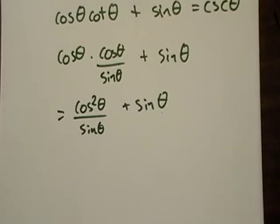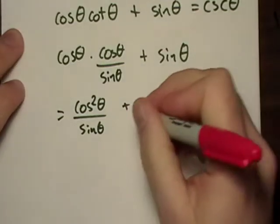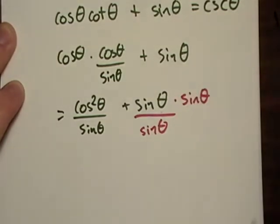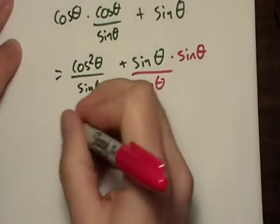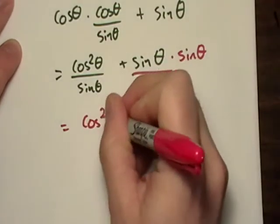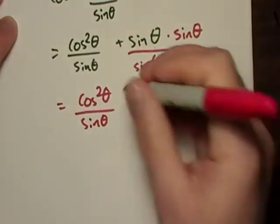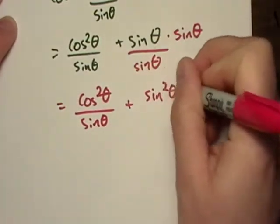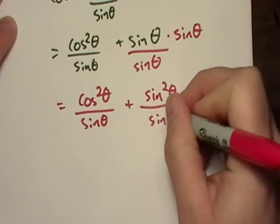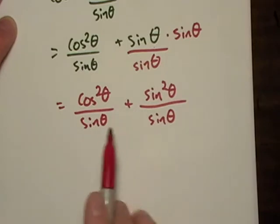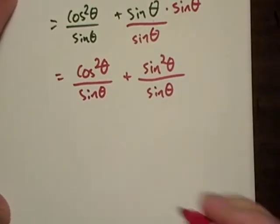Now what I want to do is, any time I run into a fraction plus a whole number, I want to get a common denominator, so I'm just going to go ahead and do that, and that ends up leaving me with cosine squared theta over sine theta plus sine squared over sine squared. Now I can rewrite these as a combined fraction now that I've got my common denominator.